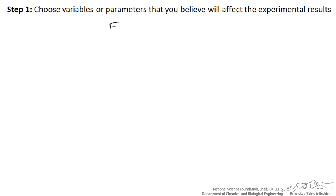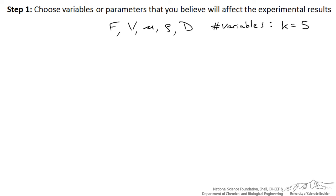The first step, which is often the hardest step, is to choose variables or parameters that may affect the experimental results. This is challenging because it is hard to see it at the beginning. What we ultimately want to measure is the force of drag. The parameters that might affect it: the velocity of the fluid, the viscosity of the fluid, the density of the fluid, and the diameter of the sphere. We count up the number of variables — we call it k — and in this case k is equal to 5 because we have 5 variables.